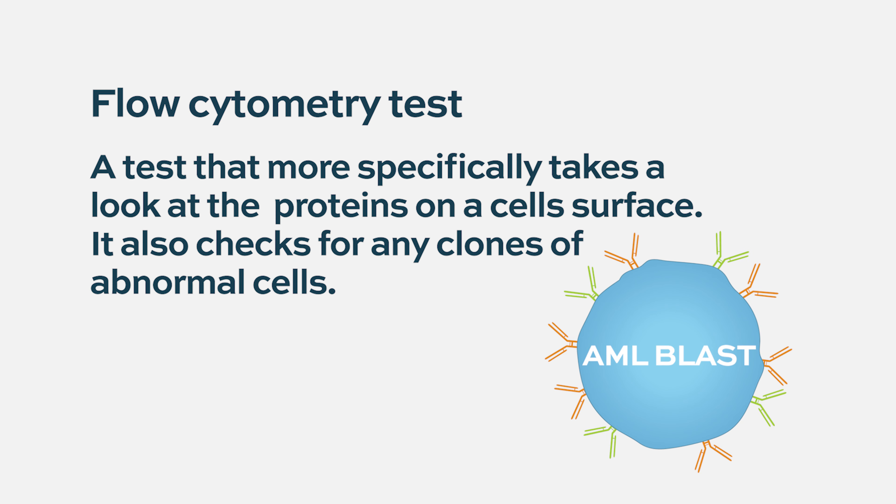That would take the form of immunohistochemistry stains, where special stains are performed on the blood cells to understand what proteins are on the cell surface and whether those cells appear to be coming from the same clone. We complement that with flow cytometry, which is more specific at looking at exactly what proteins are on the cell surface and whether we have a clone of abnormal cells — in AML's case, abnormal immature cells indicating a problem.